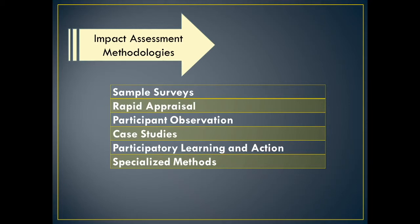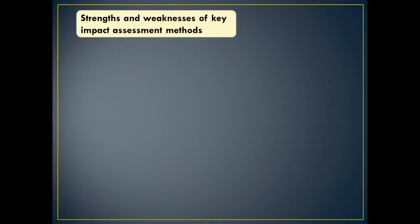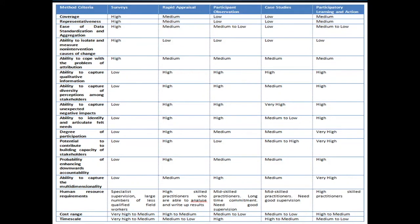The specialized method involves photographic records and videos. Moving on, we observe how the survey is done — it is recorded in terms of high, medium, and low across five columns with the specified criteria. This is how the overall survey is conducted.